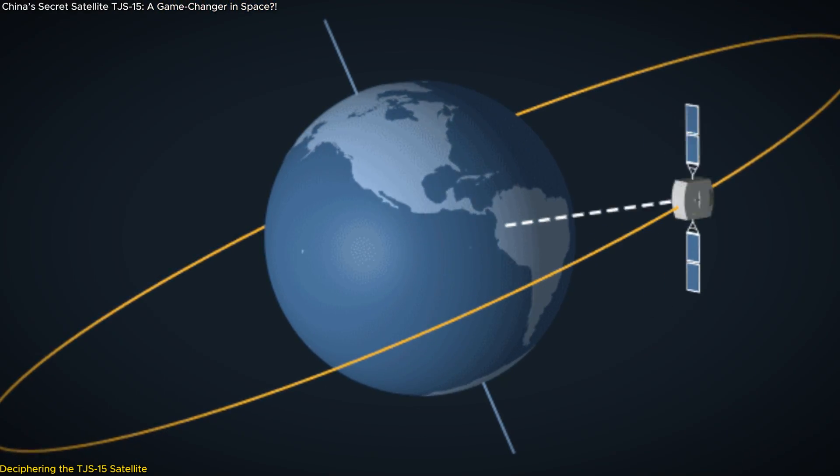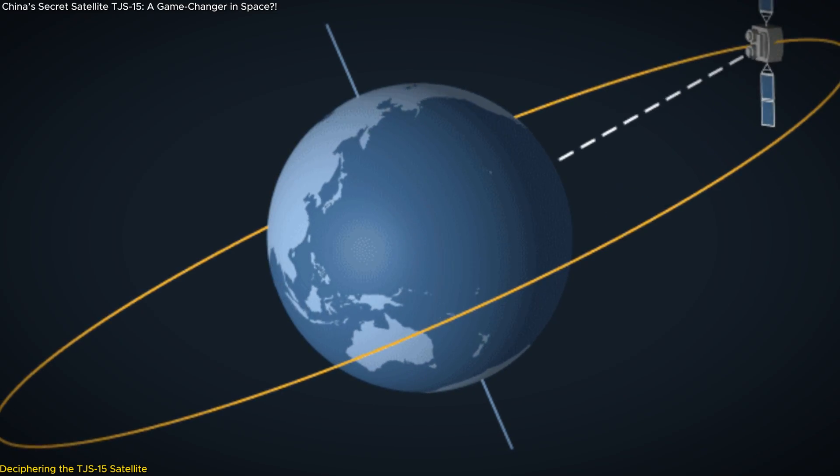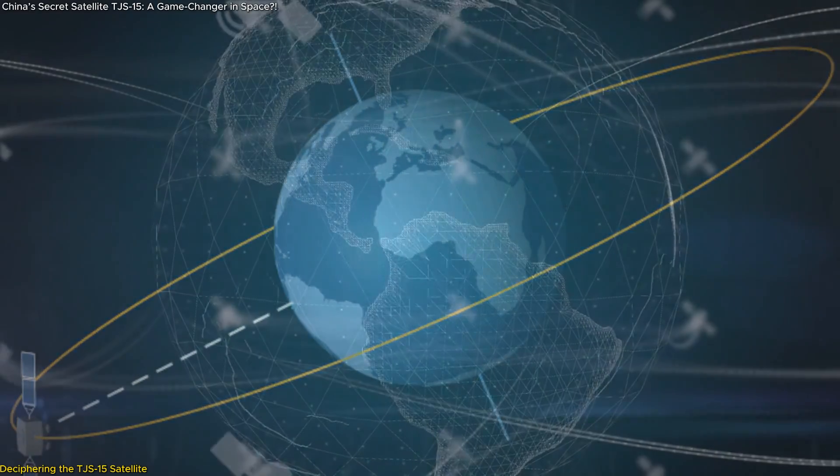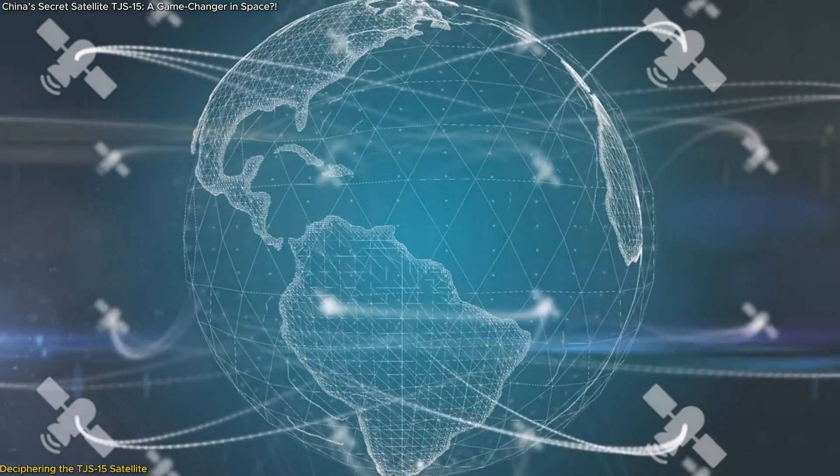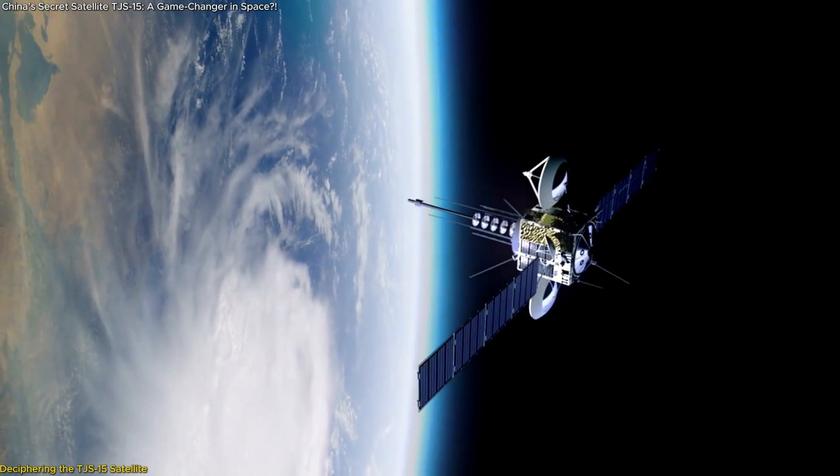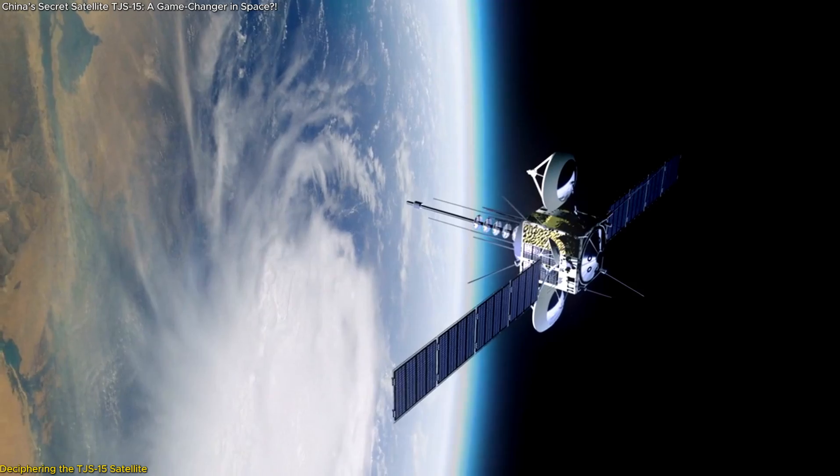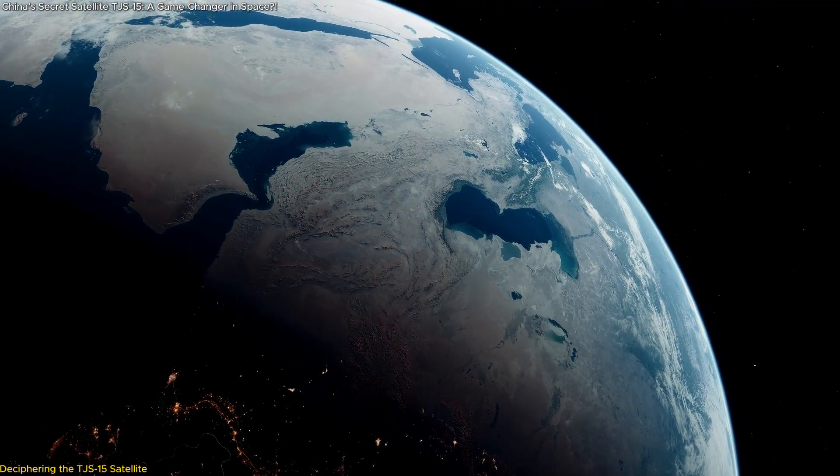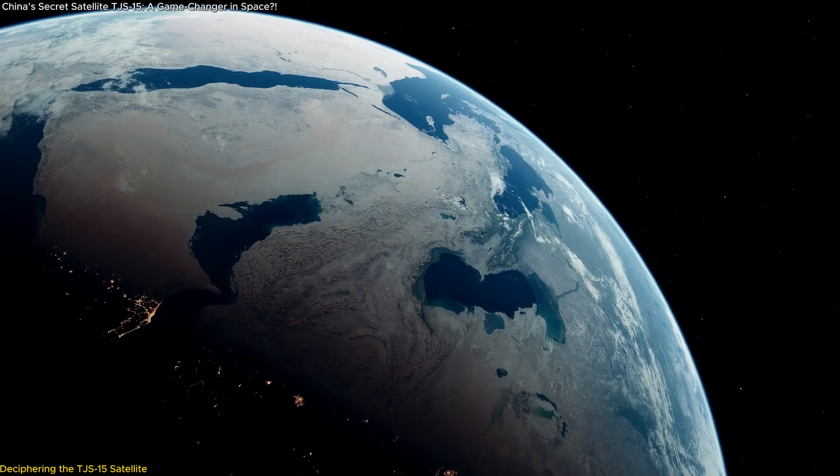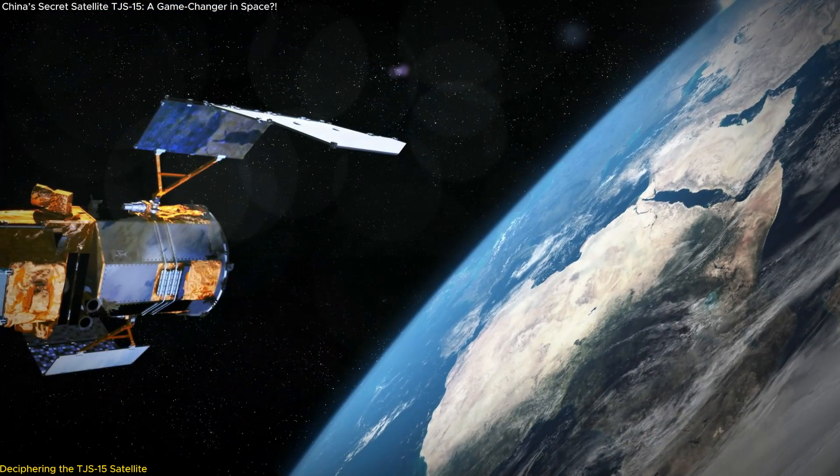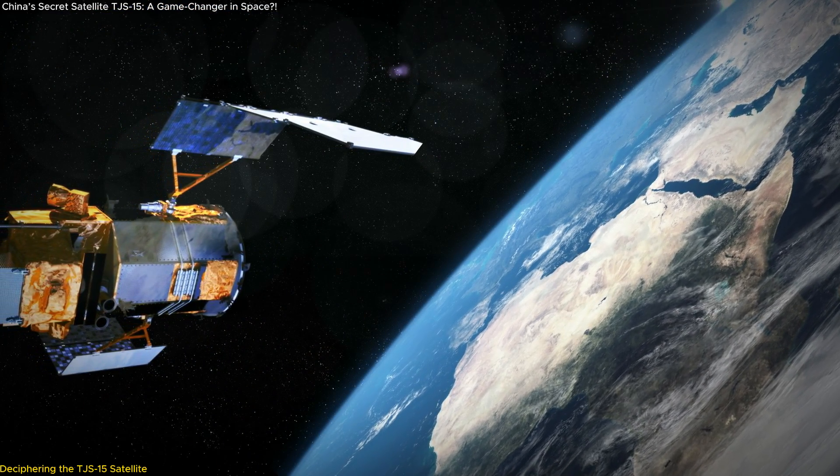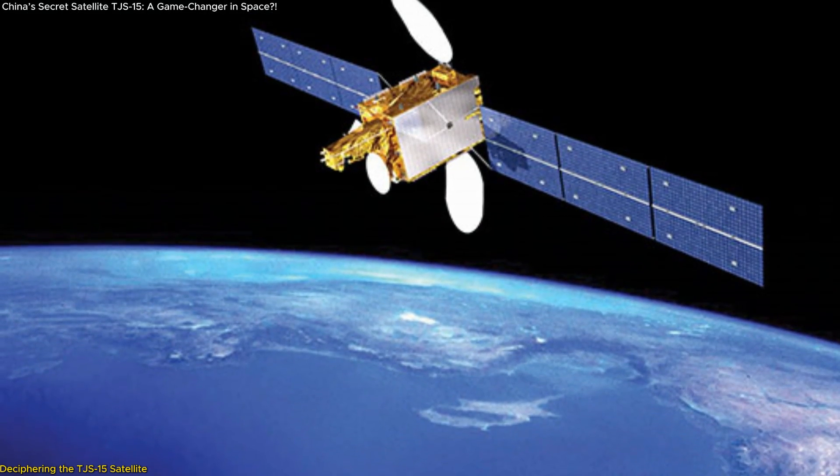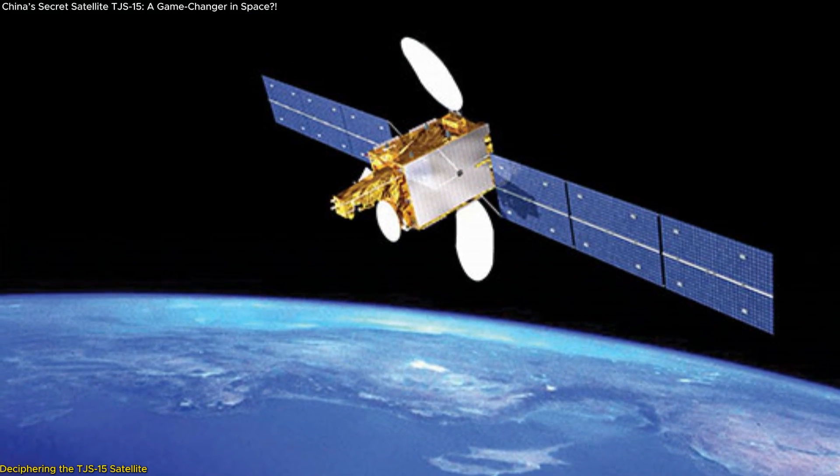The TJS-15's insertion into geosynchronous transfer orbit aligns with the operational patterns of its predecessors, many of which have settled into geostationary orbits. This orbital position allows a satellite to maintain a fixed point relative to the Earth's surface, making it ideal for continuous monitoring or communication over specific regions. The strategic placement and the veil of secrecy surrounding the TJS series underscore the potential significance of these satellites in China's broader space strategy.